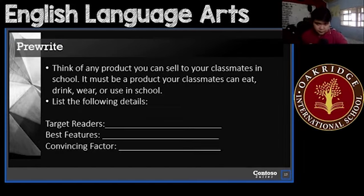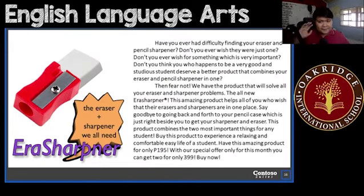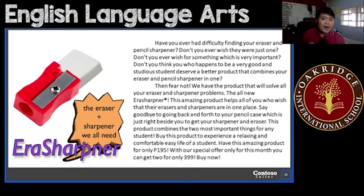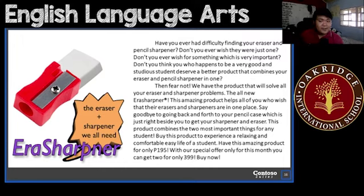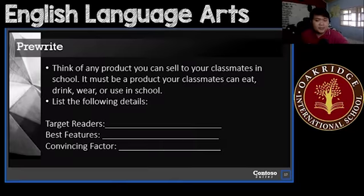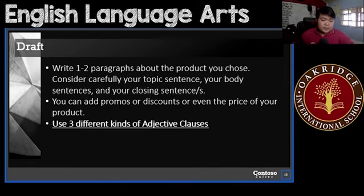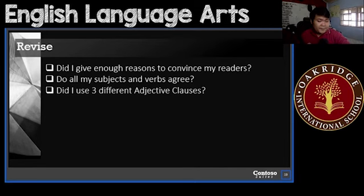If you go back to my example, I'd like to point out some of the adjective clauses I used. For example, 'who happens to be a very good and studious student' — that's one of them. Or 'which is very important.' These are the different adjective clauses that I used. You do it too — think of adjective clauses that you can incorporate in your advertisement.